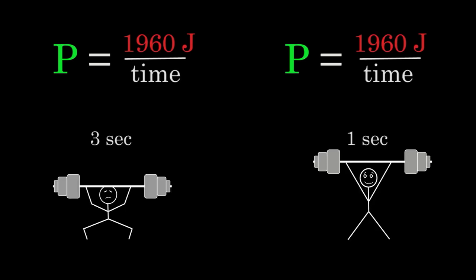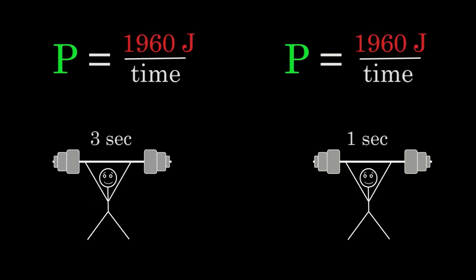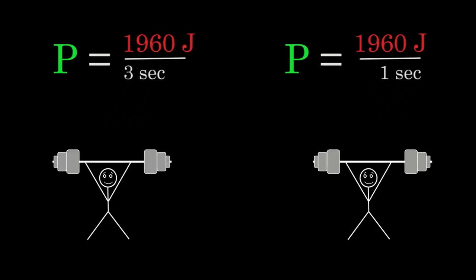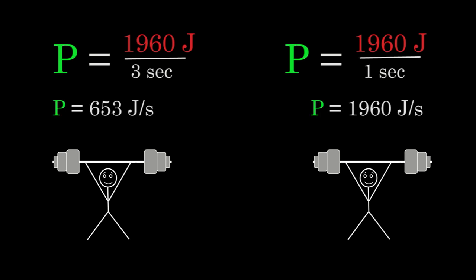The weightlifter on the right takes 1 second to lift his weights and the weightlifter on the left takes 3 seconds to lift his weights. If we plug those times into the definition of power, we'll find that the power output of the weightlifter on the right during his lift is 1,960 joules per second.